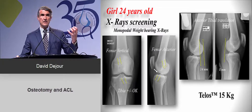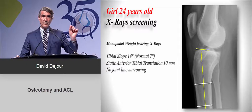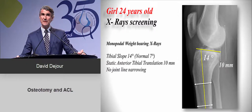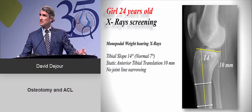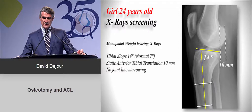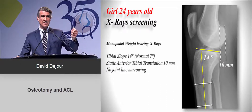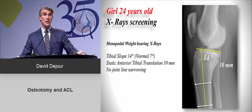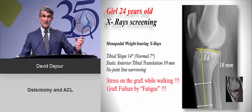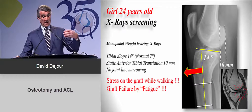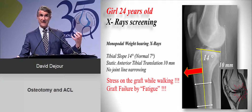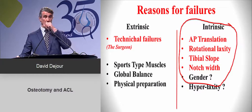If you do some stress X-rays, you can quantify the amount of laxity — and it's very important to quantify that. If you look at the tibia on the monopodal weight-bearing X-rays, you can measure the tibial slope. The normal value is seven degrees. This girl is at 14 — twice the normal value. The static anterior tibial translation is around 10 millimeters, meaning that when she's walking she puts 10 millimeters of strain on her graft. There is no joint line narrowing, so the stress on the graft due to the high tibial slope leads to graft failure by fatigue — a stress rupture.